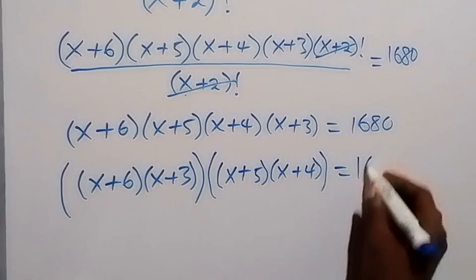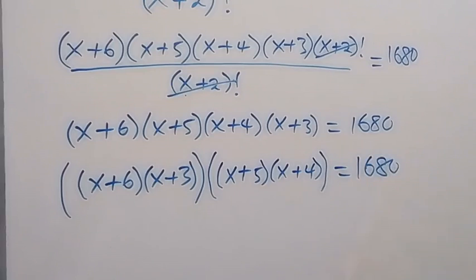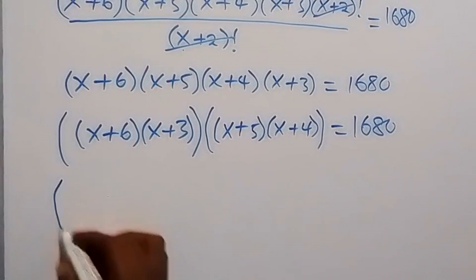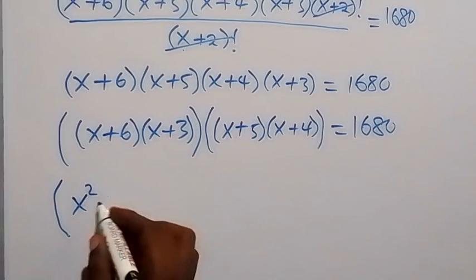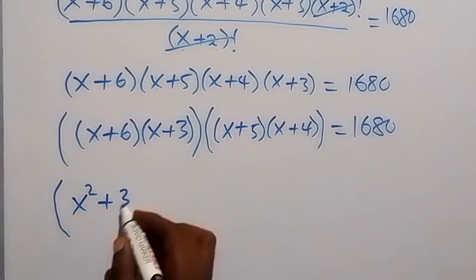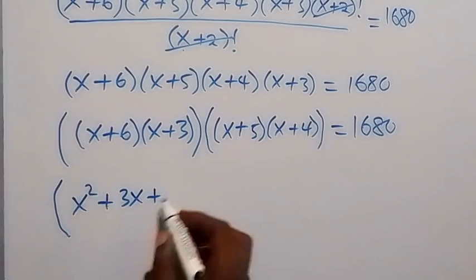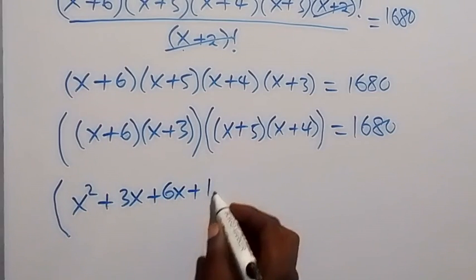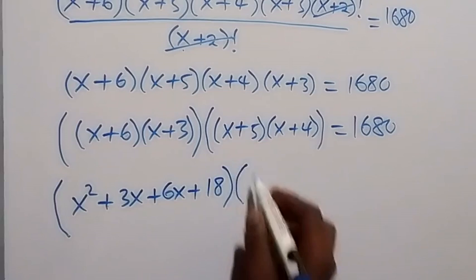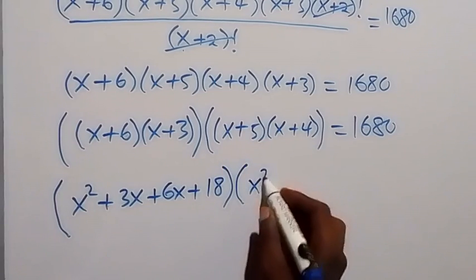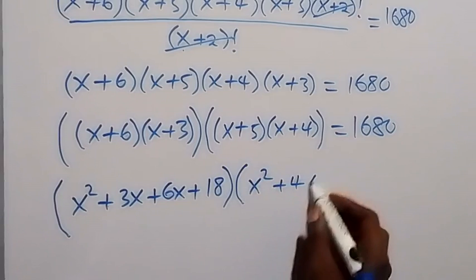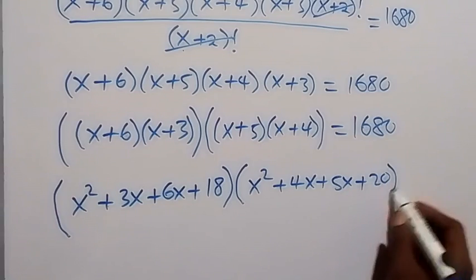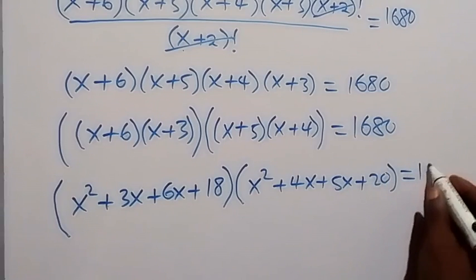This gives us [(x + 6)(x + 3)] × [(x + 5)(x + 4)] = 1680. We expand each bracket: the first gives x² + 9x + 18, and the second gives x² + 9x + 20, and this equals 1680.